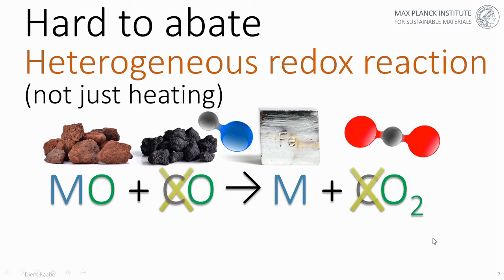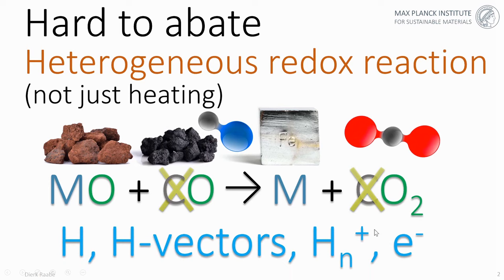The important task for ongoing research is to find scientific ideas for replacing and eliminating carbon from these types of heterogeneous redox reactions. There are different opportunities available — you can use hydrogen instead of carbon as a reductant. The thermodynamics is, of course, quite different and must be considered in such ventures.